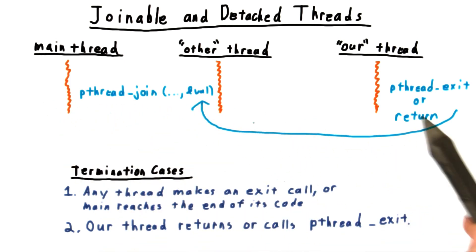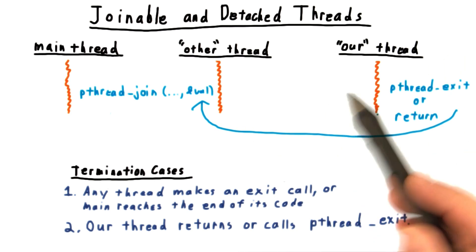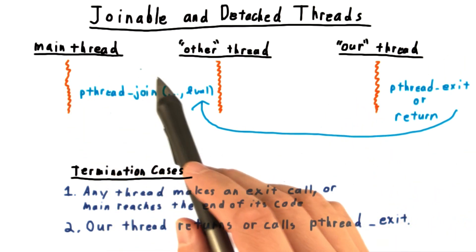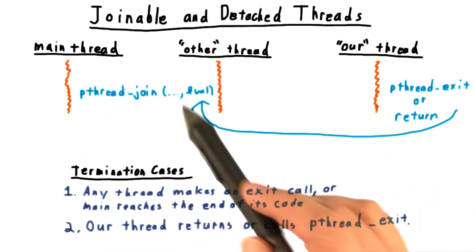This call blocks until the joinable thread is finished, though it's okay if it's finished already. So it's okay for the join call to be made before the joinable thread is finished.